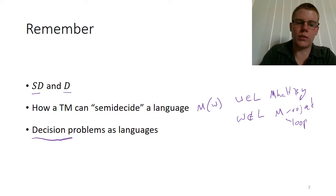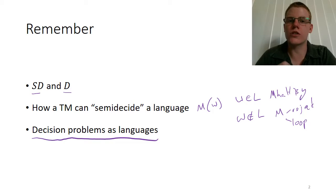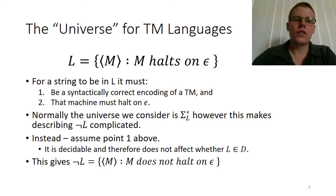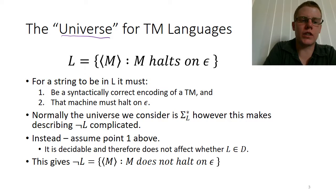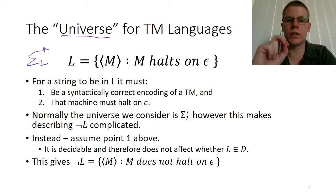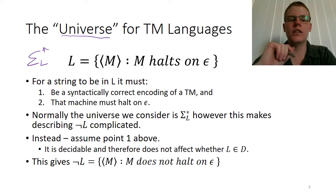We also want to talk about decision problems as languages. If we have a problem where we have to decide yes or no, we can almost always model those as a language, where the instances of the problem correspond to strings that may or may not be in the language. The first thing I'll discuss is what the universe of all strings is when we're talking about languages that involve the encoding of Turing machines.